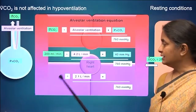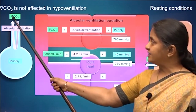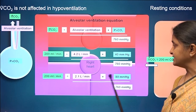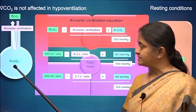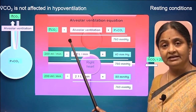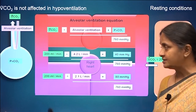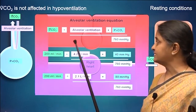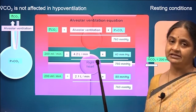When ventilation is halved, the volume of carbon dioxide eliminated will still be the same as whatever is formed in the tissues. But the consequence is that alveolar carbon dioxide concentration will double. Since arterial carbon dioxide equals alveolar carbon dioxide, the result is a doubling of arterial carbon dioxide as well. At steady state, whatever carbon dioxide is formed in tissues will be eliminated, but there will be an increase in arterial carbon dioxide concentration.